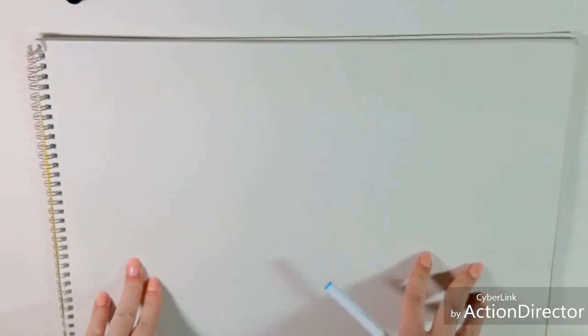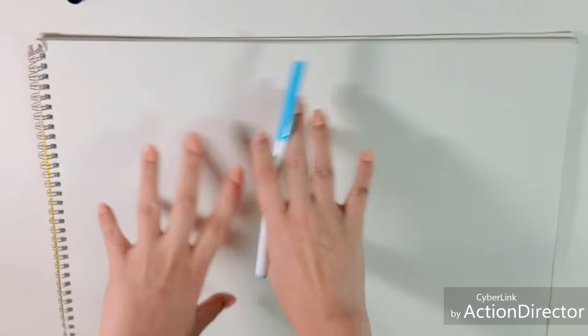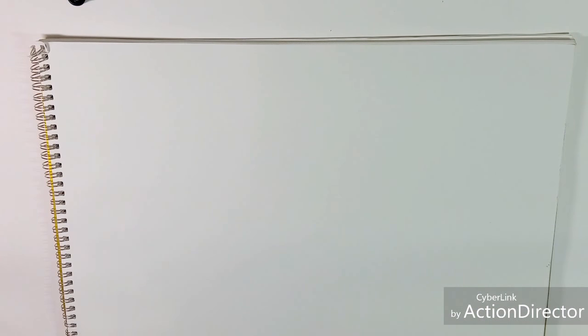So I'm going to be doing my demos on Strathmore 300 series drawing paper, this nice large pad so I can show the kids tomorrow sort of a finished version. And I'm going to be doing my sketching just using Crayola super tip markers.